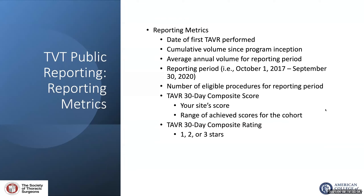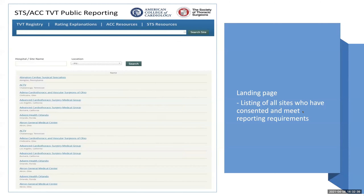The reporting metrics include the date of your first TAVR at your institution, cumulative volume since program inception, average annual volume for the reporting period, the exact date of the reporting period, the number of eligible procedures, the TAVR 30-day composite score including your site's score and the range of scores for the overall cohort, and a composite rating of one, two, or three stars. The landing page will be a listing of all sites that have consented and meet reporting requirements, with each site having a hyperlink to its specific data.